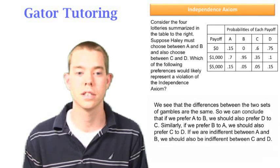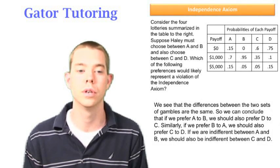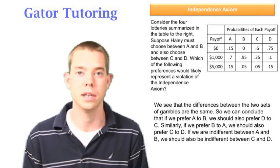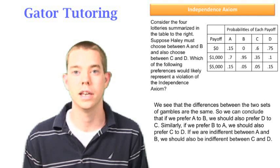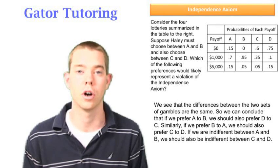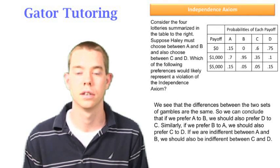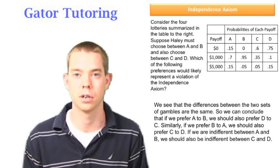So, because the differences between the two sets of gambles are the same, we can conclude that if we do prefer A to B, we should also prefer D to C. Similarly, if we prefer B to A, we should also prefer C to D. And lastly, if we're indifferent between A and B, we should also be indifferent between C and D.